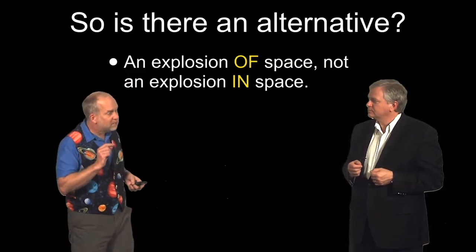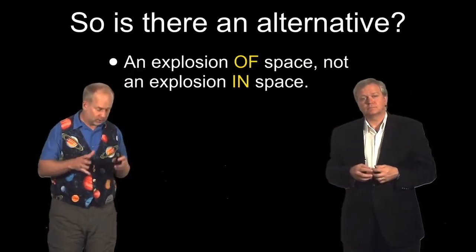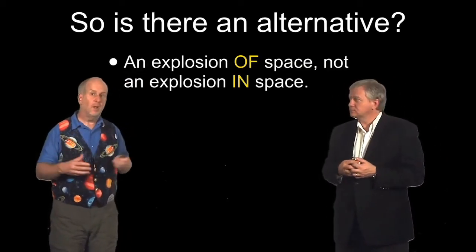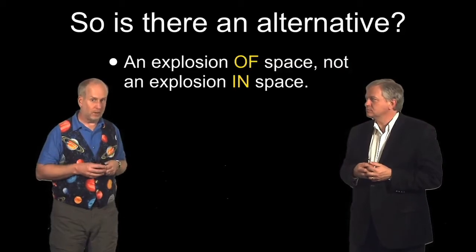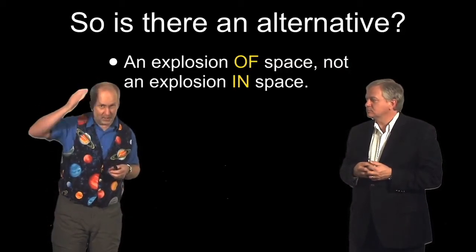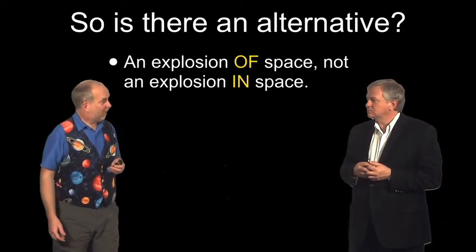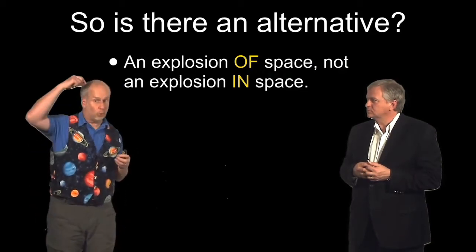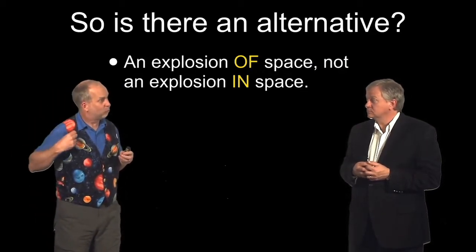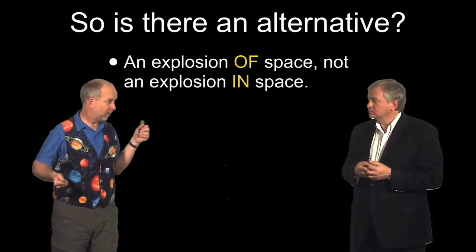Luckily, Einstein's theory is a bit different from that. What Einstein said is, sure, there is more space welling up, but it doesn't affect things that are bound together. So, for example, my head and my feet are attached, because there's a whole chain of atoms all the way up and down, each of which is chemically bound to each other. So they're not being pulled apart by the expansion of space.